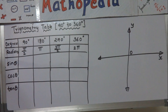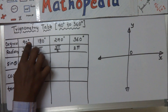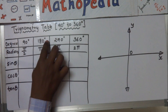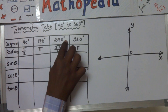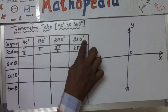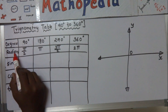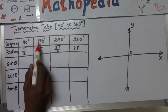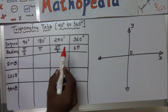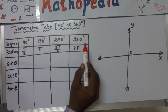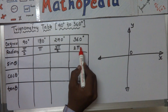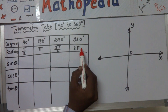The standard angles from 90 degrees to 360 degrees are: 90 degrees, 180 degrees, 270 degrees, and 360 degrees. Their equivalents in radians are: 90 degrees is pi by 2 radians, 180 is pi radians, 270 is 3 pi by 2 radians, and 360 is 2 pi radians.